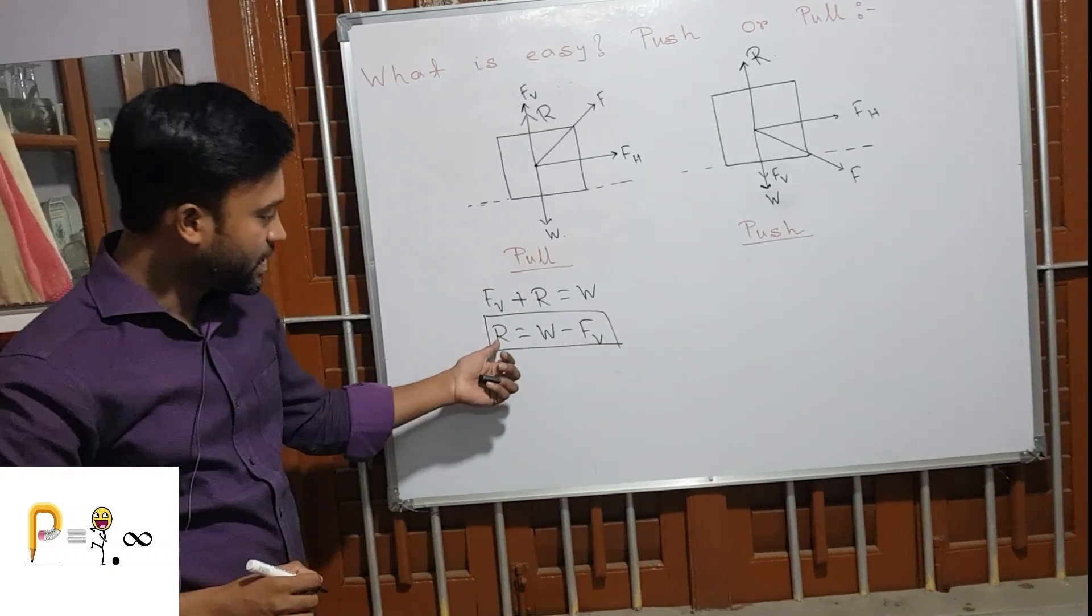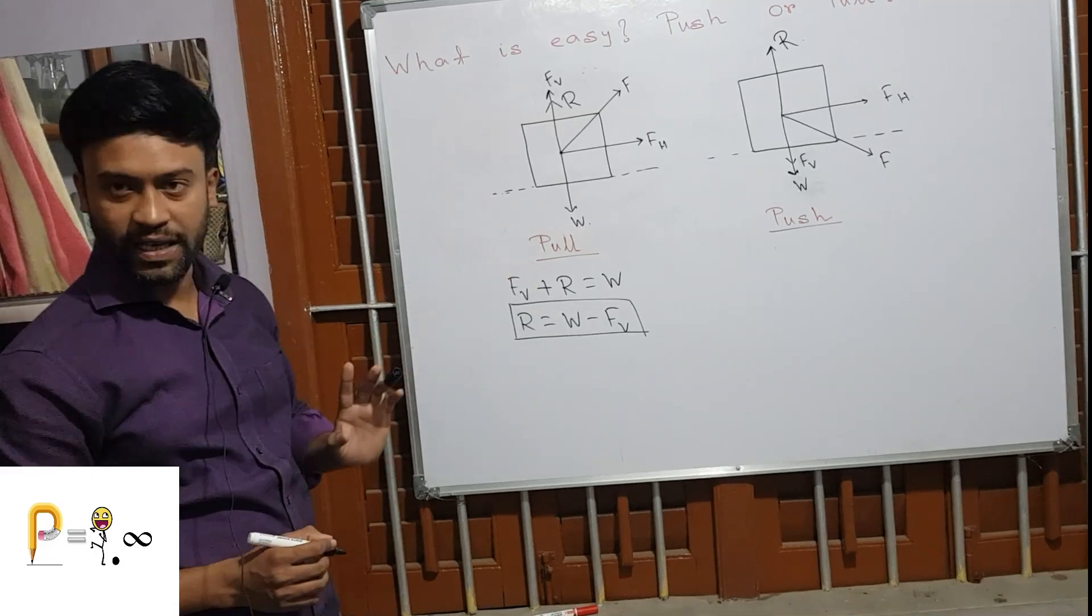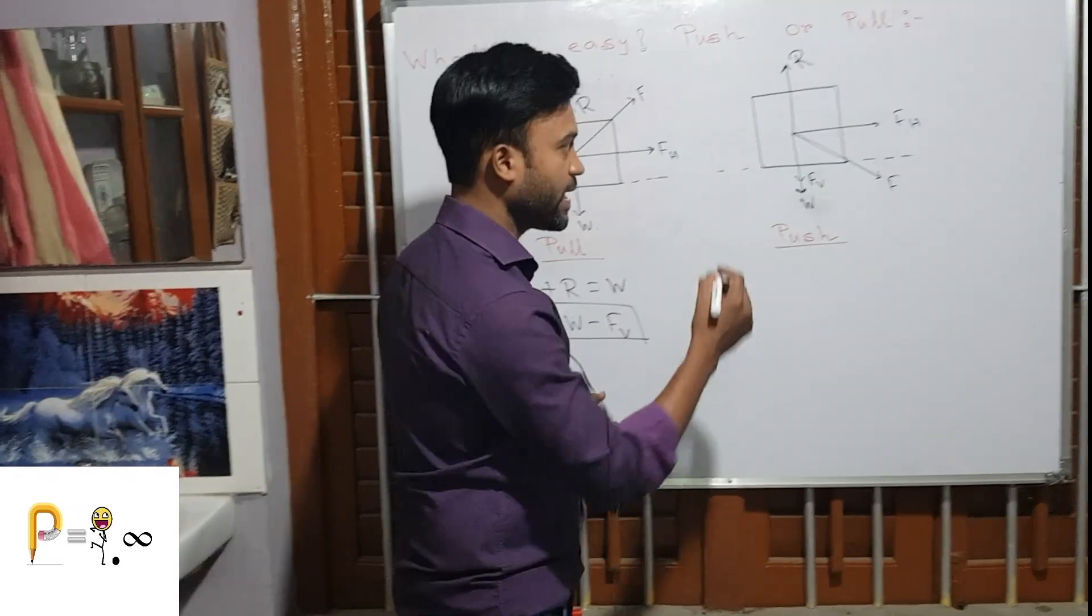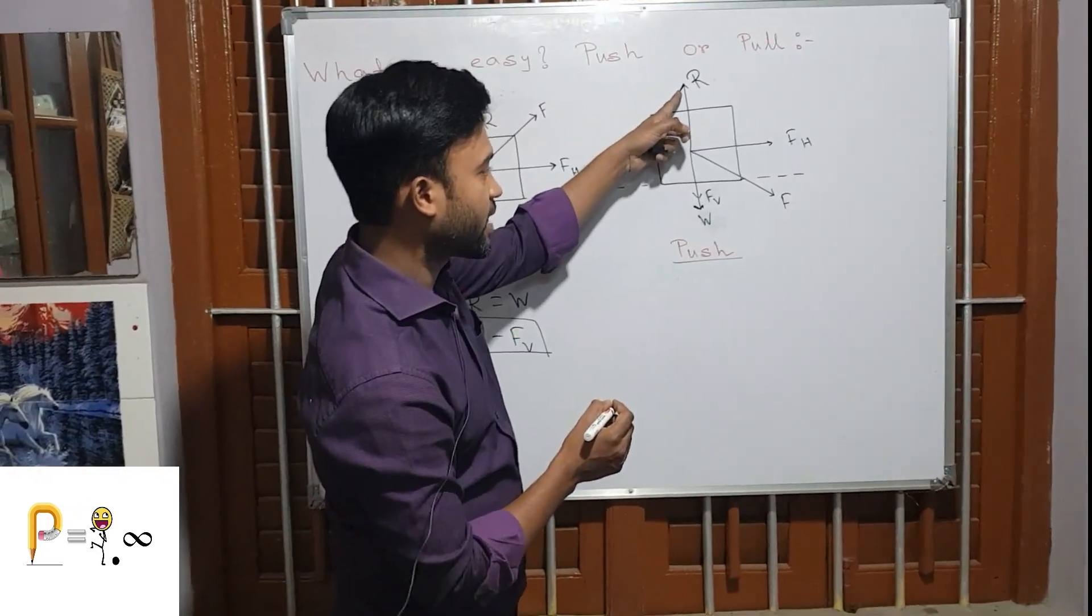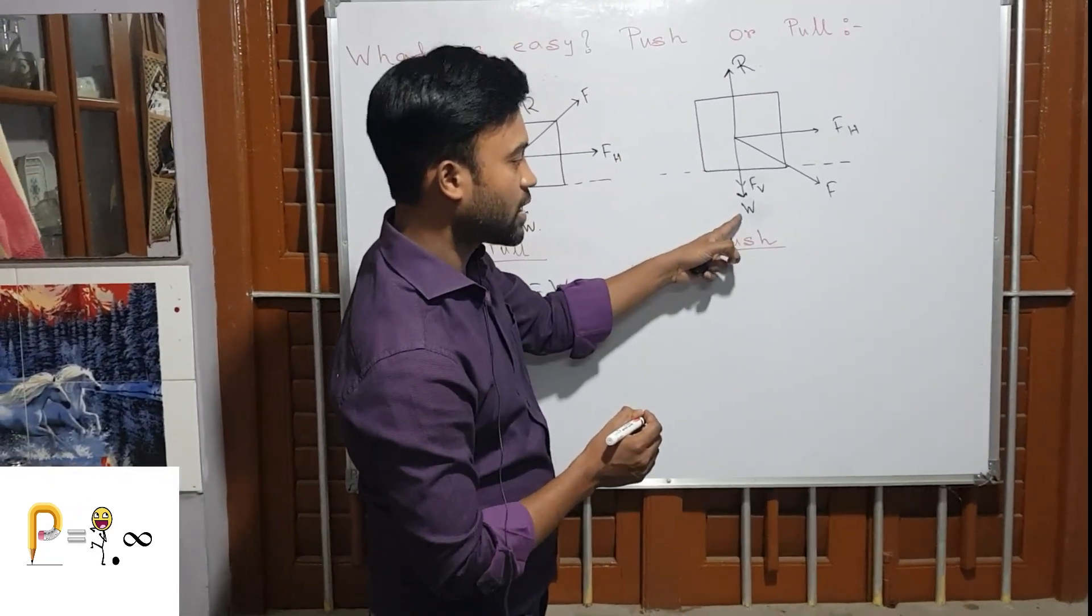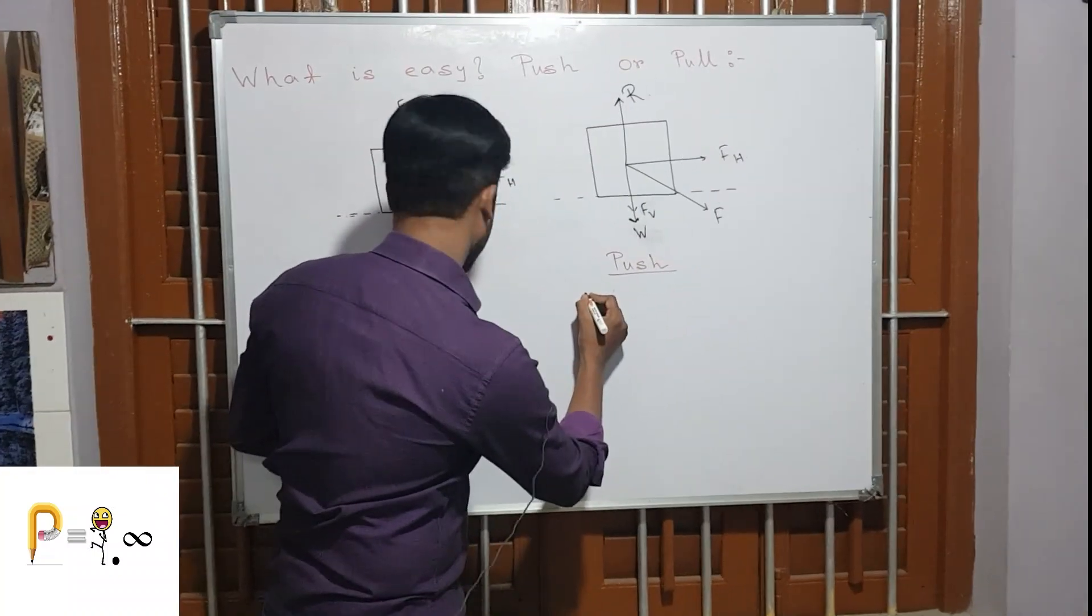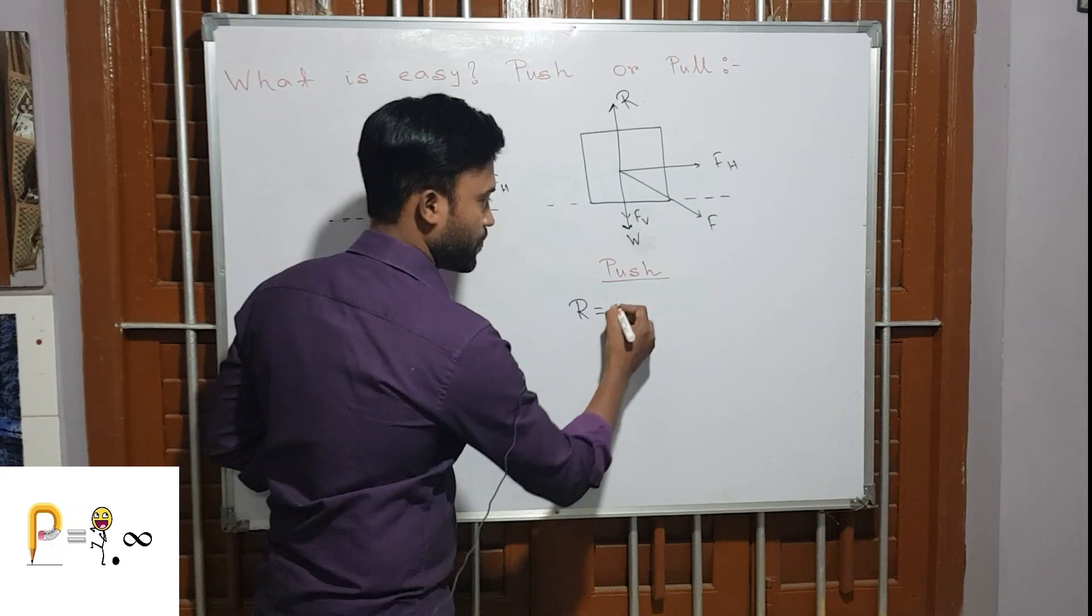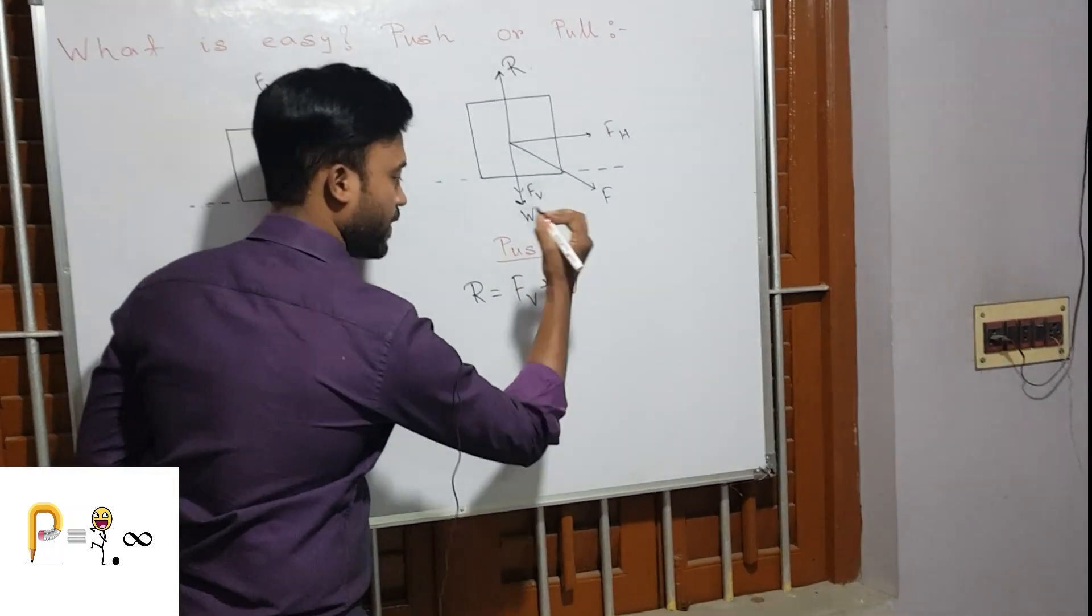This is the reaction force for pulling. In case of pushing, with reaction acting up, vertical force, and weight acting down, the reaction equals R = Fv + W.